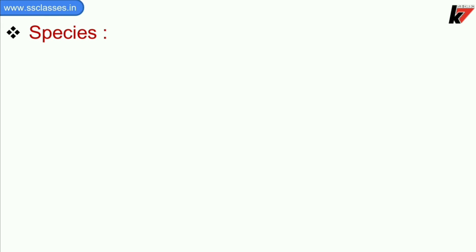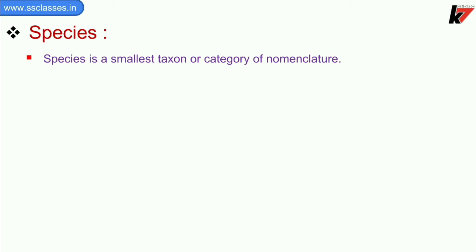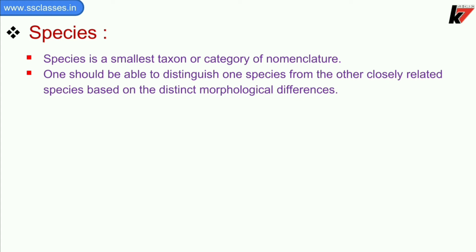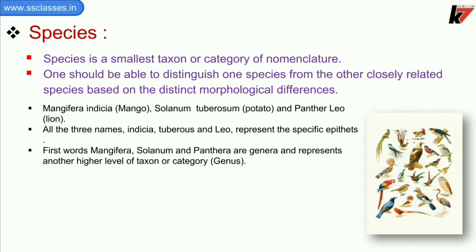Now we will see different types of taxonomic categories to understand the naming of organisms. Species is the smallest taxon or category of nomenclature. One should be able to distinguish one species from another closely related species based on distinct morphological differences. For example: Mangifera indica is mango, Solanum tuberosum is potato, and Panthera leo is lion. Here indica, tuberosum, and leo represent the specific epithets.